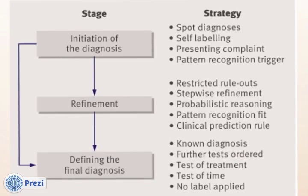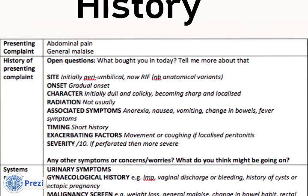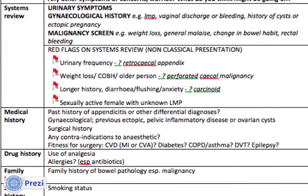Next, we move on to refinement of the diagnosis through the history, examination, and initial investigations. For the history, the purpose is to elicit the patient's story and to further define the abdominal pain. SOCRATES is a useful acronym in this regard. On systems review, do ask about gynaecological symptoms and screen for malignancy. Red flags may suggest an unusual underlying cause, and the rest of the history is structured on screen.